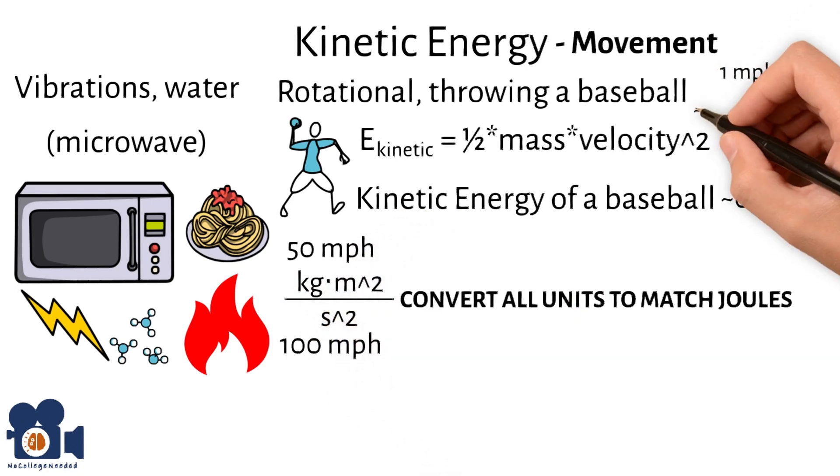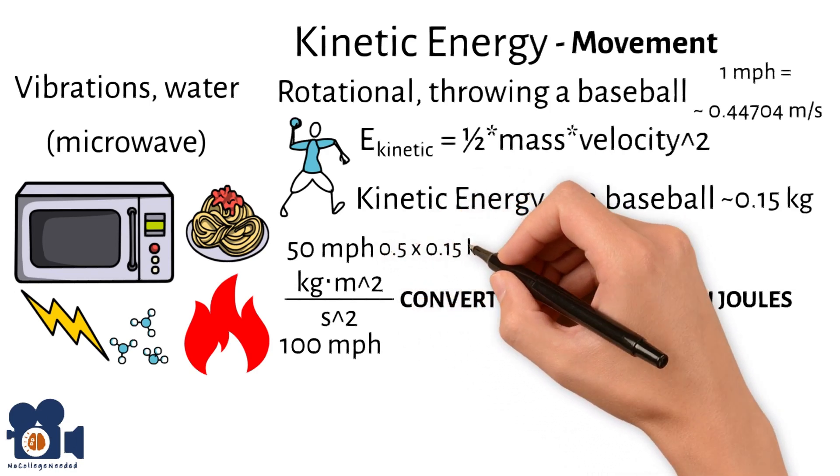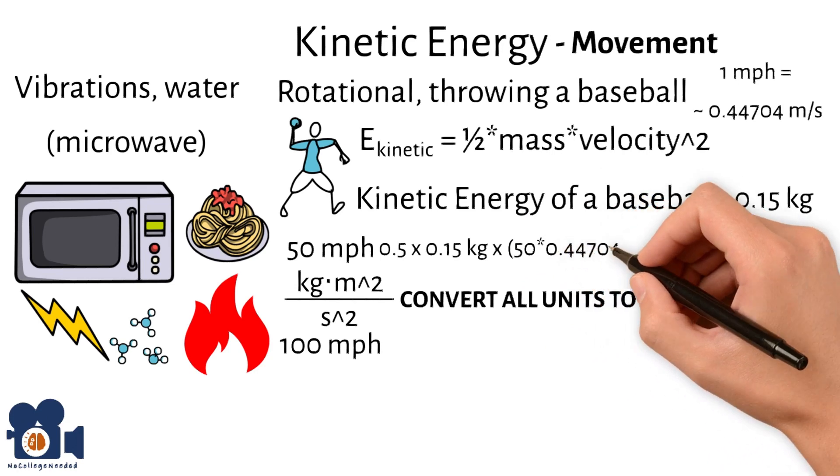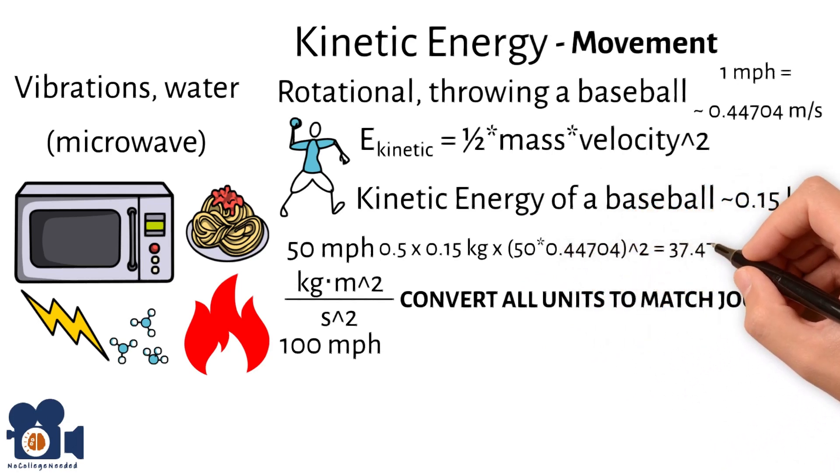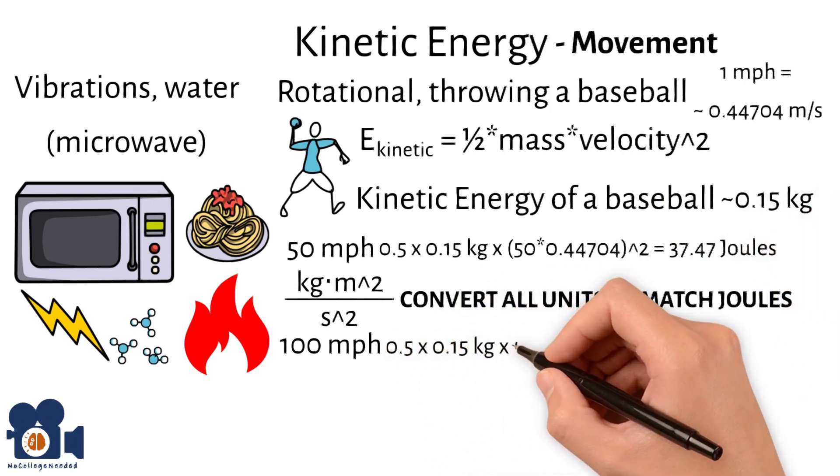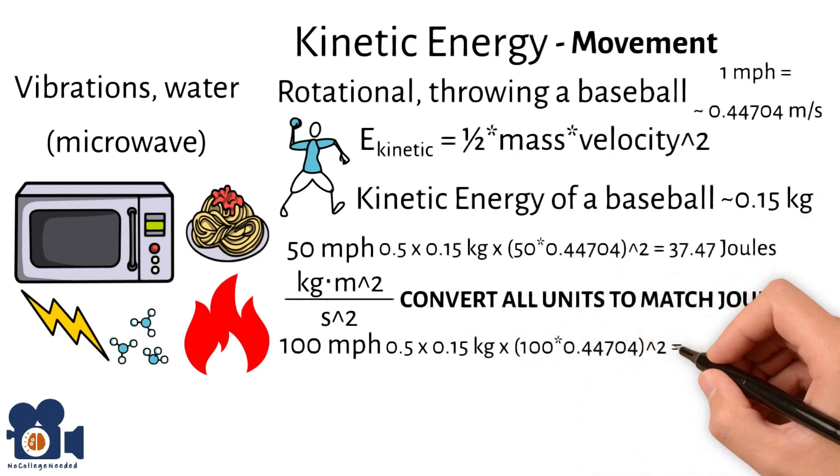One mile per hour equals approximately 0.44704 meters per second. So the two equations would look like 0.5 times 0.15 times 50 times 0.44704 squared equals 37.47 joules. And 0.5 times 0.15 times 100 times 0.44704 squared equals 149.88 joules.